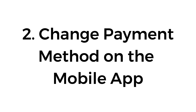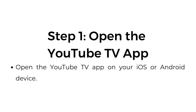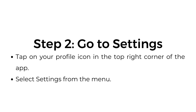Number two: change payment method on the mobile app. Step number one, open the YouTube TV app on your iOS or Android device. Step number two, go to settings. Tap on your profile icon in the top right corner of the app and select Settings from the menu.